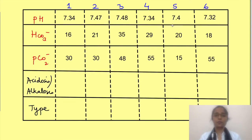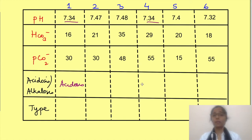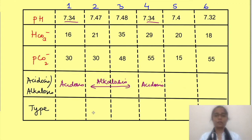Six scenarios are shown here. We will focus first on the first four scenarios — take a moment to pause and try to identify the causes. The first step is pH. From pH, we can say that the first and fourth scenarios are acidosis while the second and third are alkalosis. Let's focus first on the acidosis scenarios.